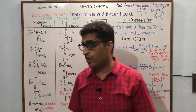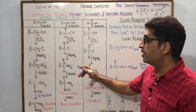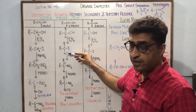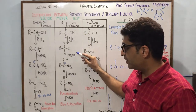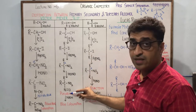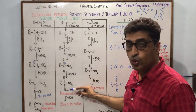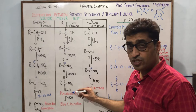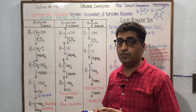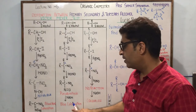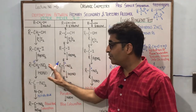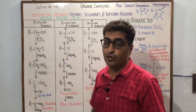For secondary alcohols, the same treatment — phosphorus iodine, then silver nitrite in ethanolic water medium, then nitrous acid — gives pseudo nitrol, which in the presence of base gives a deep blue coloration. This is a very good way to distinguish primary and secondary alcohols.